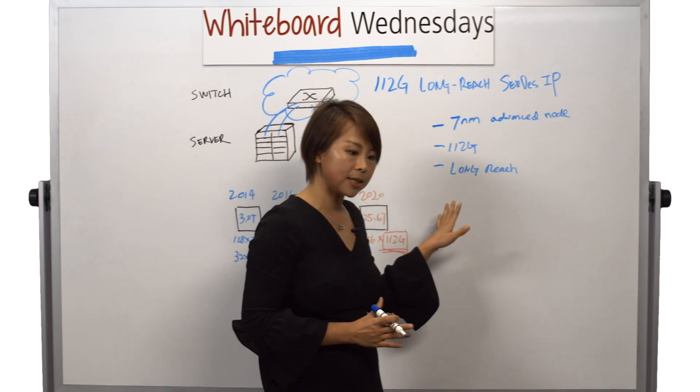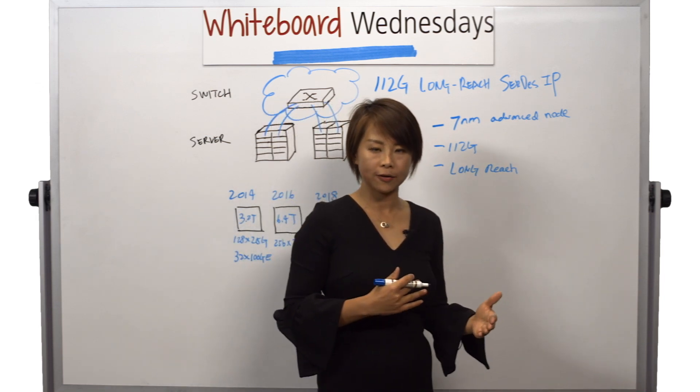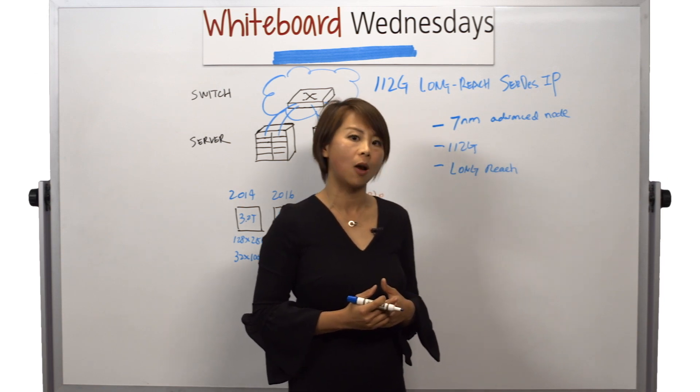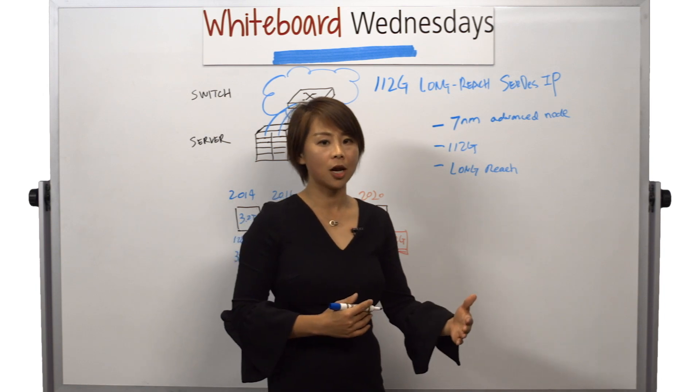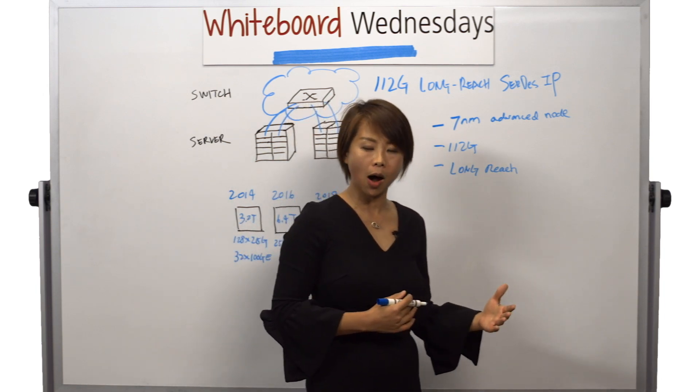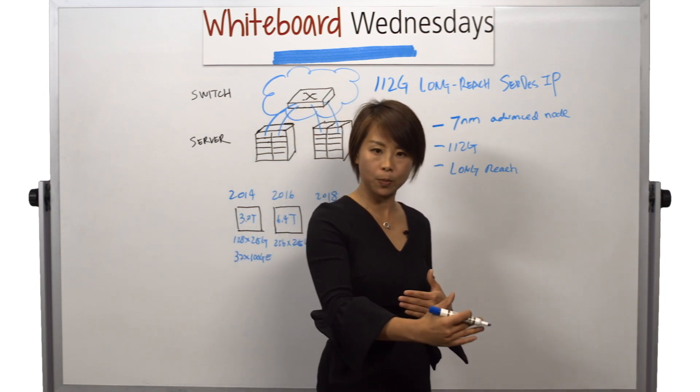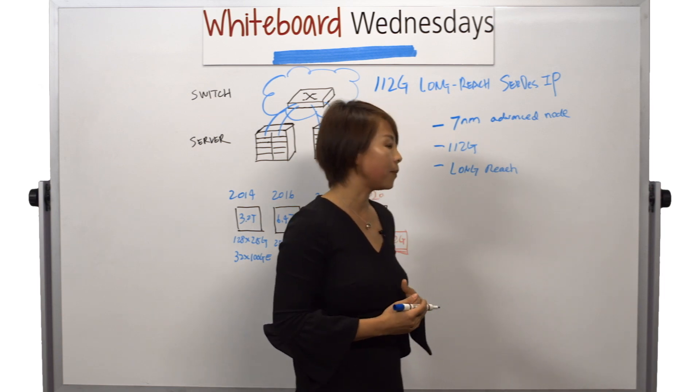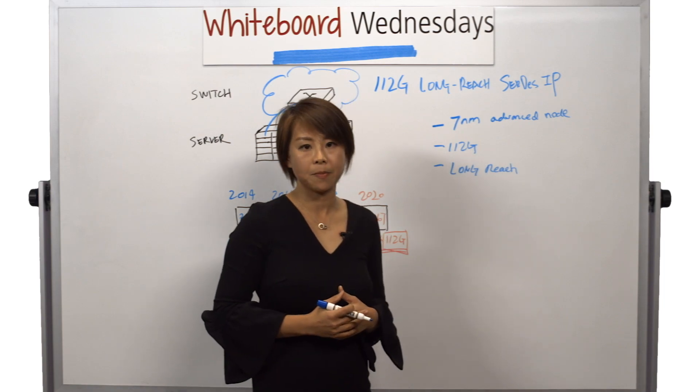So what this means is that this SerDes can drive a long-range channel, which is often greater than 30 dB of insertion loss. And the longer the channel the SerDes is capable of, that means you can drive longer PCB trace, or you can drive a longer copper link. That gives you the ultimate system benefits.